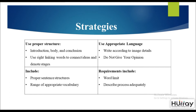The strategies to answer this type of question are as follows. You must use proper sentence structures and ensure that the structure of your writing is correct — this will include an introduction, body, and conclusion. If you use correct linking words, you can connect ideas and denote the stages appropriately. Use a range of appropriate vocabulary and language depending on the kind of image given. Do not give your opinion. Make sure you maintain your word limit and describe the process adequately.